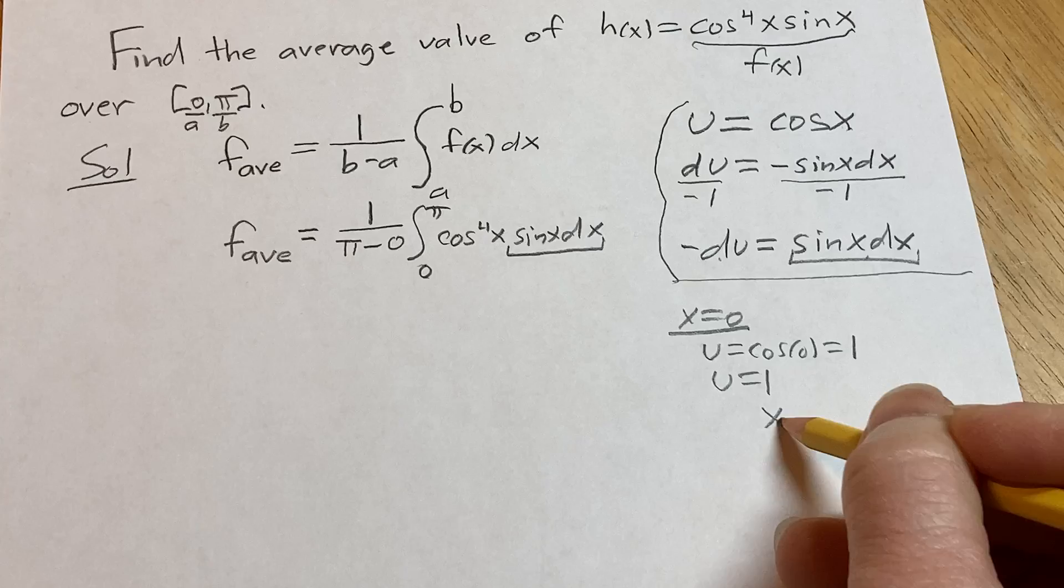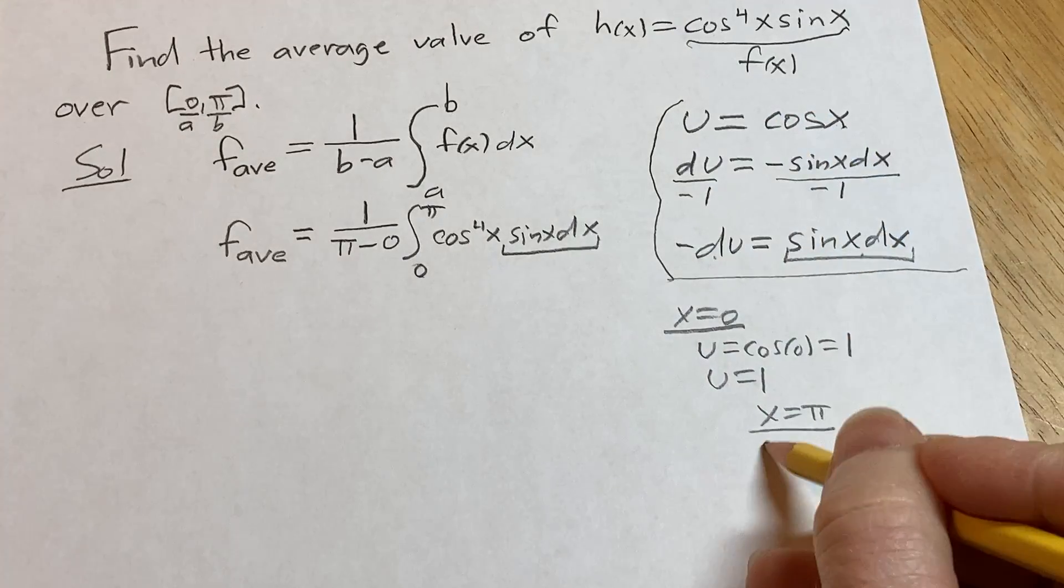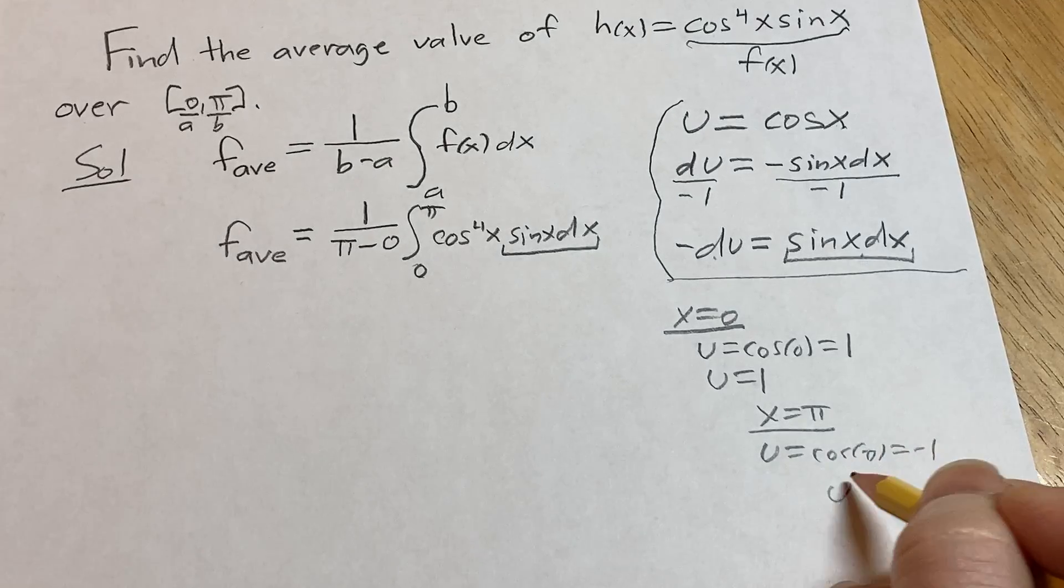And then when x equals pi, again go back to your equation where we defined u. So u is equal to the cosine of pi, which is negative 1, so u is negative 1.